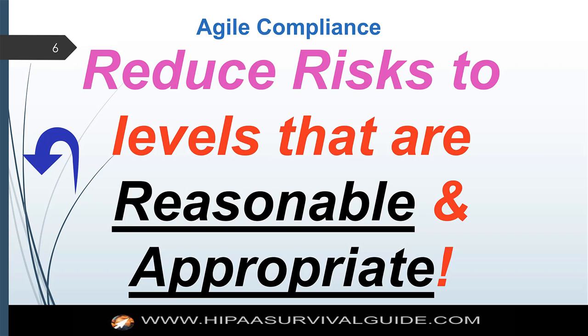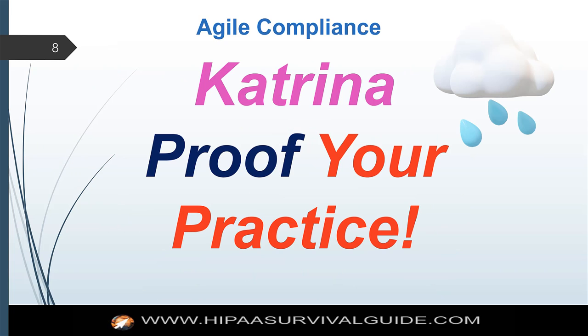Those are the words found in the security rule: reasonable and appropriate, according to an organization of your size, complexity, resources, etc. Ultimately, a federal court is going to decide what reasonable and appropriate means in a given case. But those are the words used in the security rule — reduce risk levels that are reasonable and appropriate. That's what we are trying to do from an overall objective perspective.